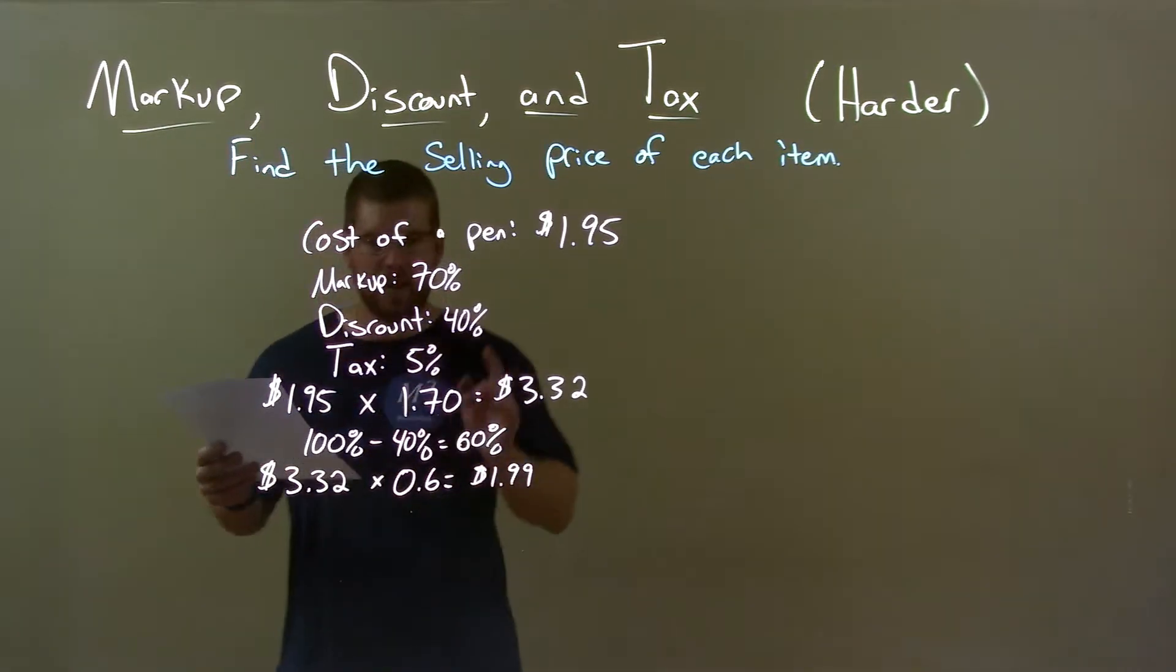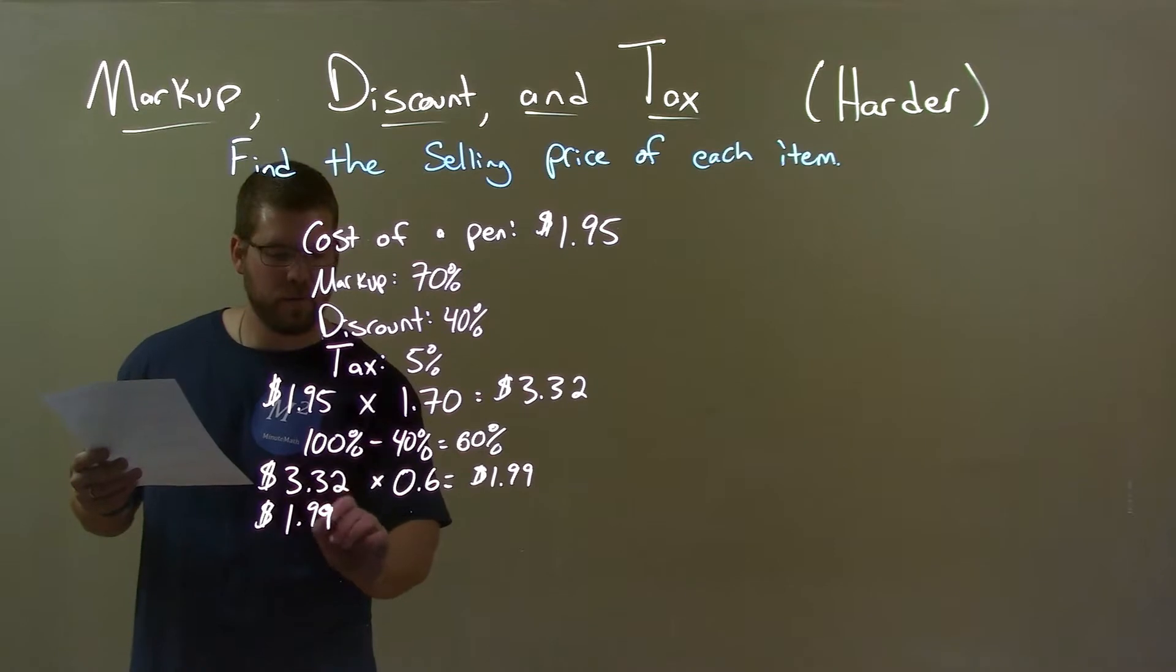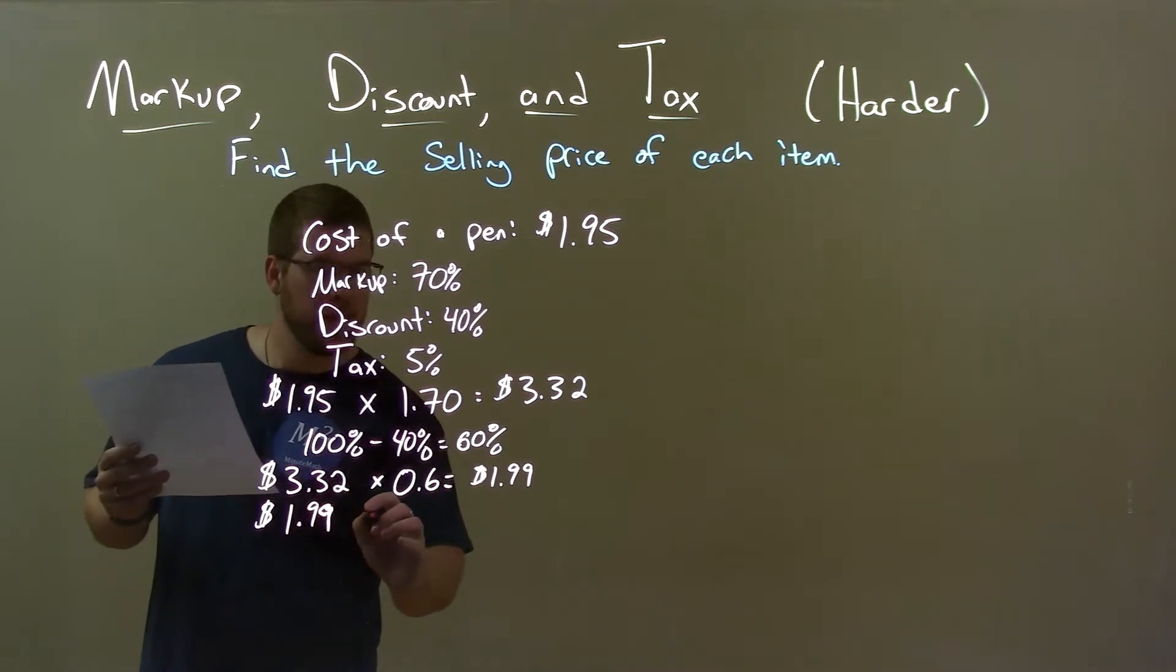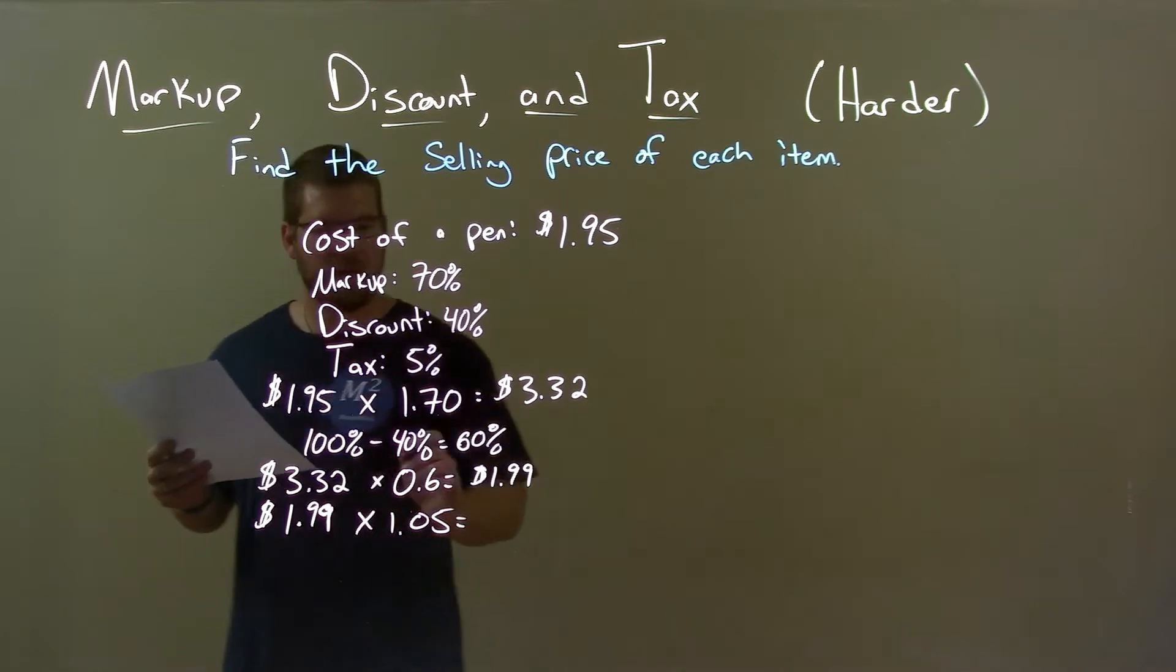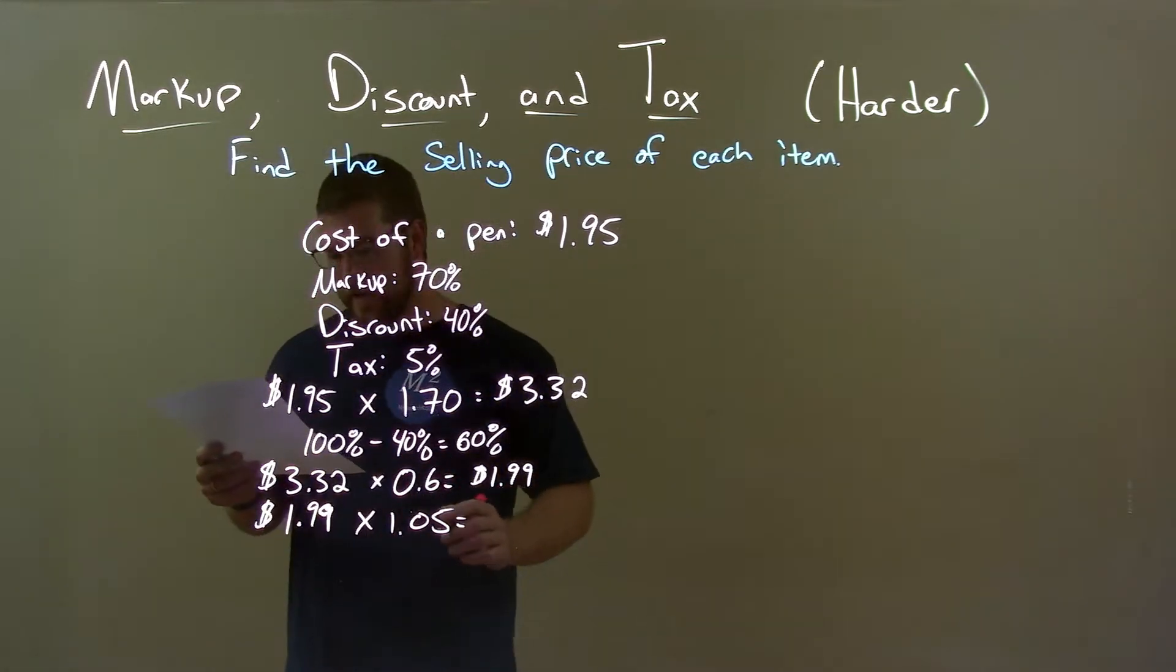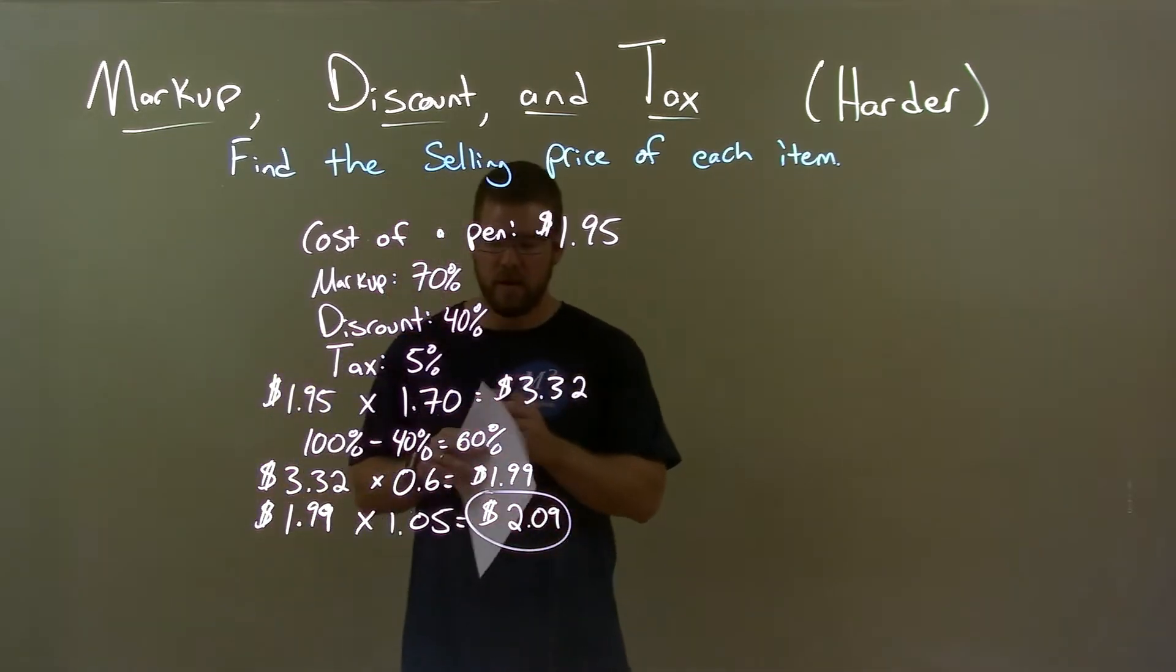Now, we gotta pay taxes. Can't forget to pay your taxes. So, we take the $1.99 and multiply that by 1.05. 1.05 represents a 5% tax and gives us a final answer of $2.09. All right? So, quick recap.